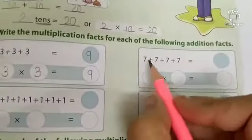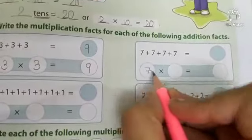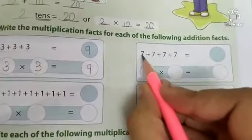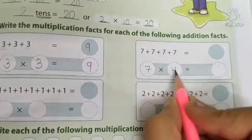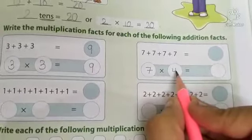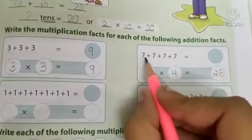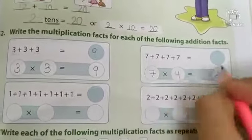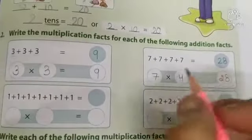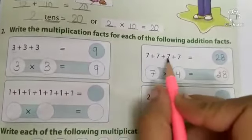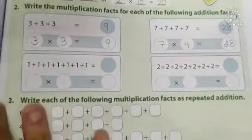Now next. Firstly, which number is this? 7. How many times? 1, 2, 3, 4. So 7 fours are 28. Now if we add 7 four times we will get 28. Answer will be 28, because 4 times 7 or 7 times 4 is equal to 28. Okay?